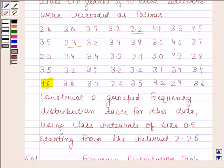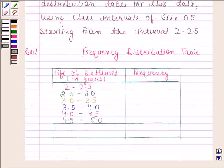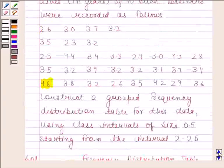Find the number of values covered within the interval 2.0 to 2.5. The values 2.3 and 2.2 are included in this interval, so the frequency is 2. Now again look at the data.